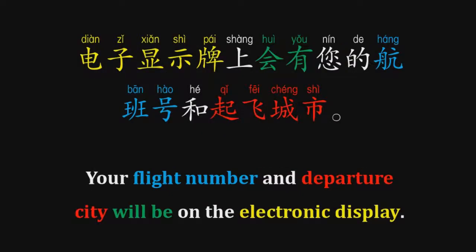Your flight number and departure city will be on the electronic display. 电子显示牌上会有您的航班号和起飞程式。